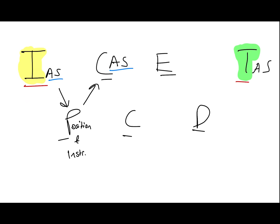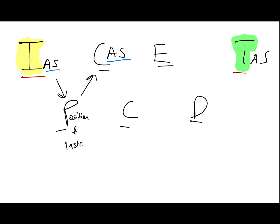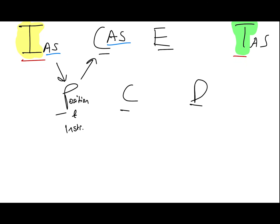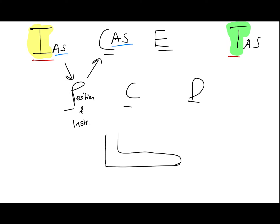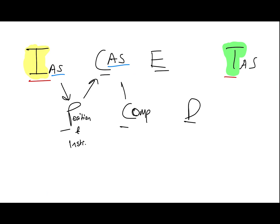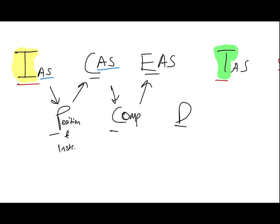One more factor: at higher speeds, air can no longer be considered incompressible. Below roughly 200 knots, air is treated as incompressible, but at higher speeds air starts to compress inside the pitot tube, introducing a compressibility error. After you factor in compressibility — that's the C in ICED-T — you get EAS, your equivalent airspeed. Pilots don't really need to know equivalent airspeed; it's more relevant for aircraft design and engineers.